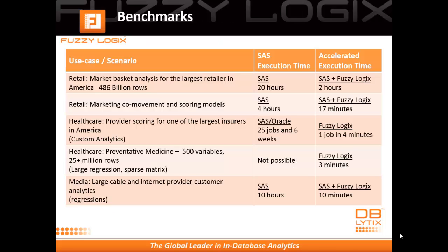What kind of performance enhancements can you expect? We've got a variety of use cases that suggest from 10 to 100 times improvement. We have the case of a market basket analysis for a large retailer that included 486 billion rows. In the existing SaaS process, it took 20 hours. The SaaS process combined with Fuzzy Logix was now a mere two hours.